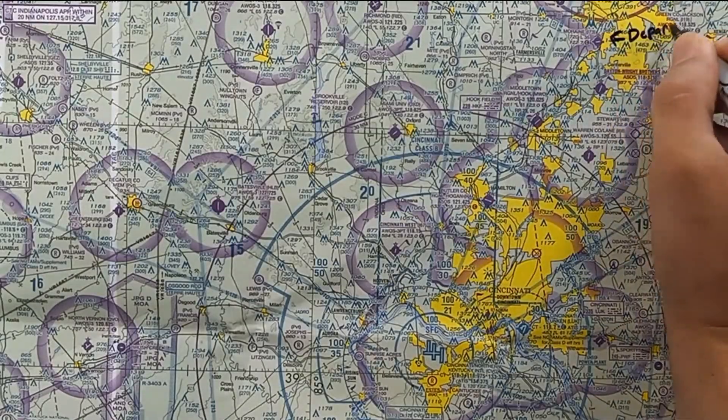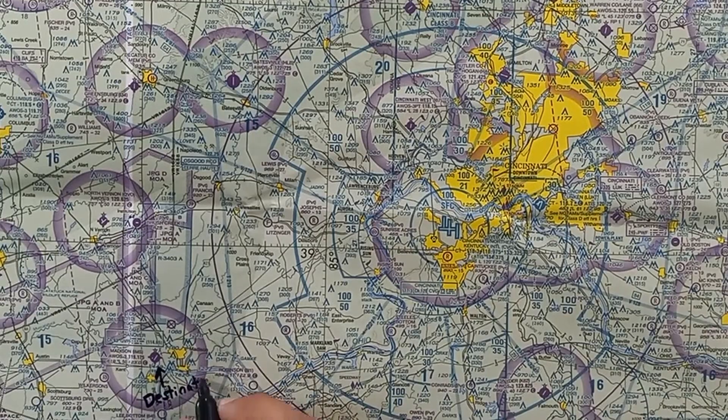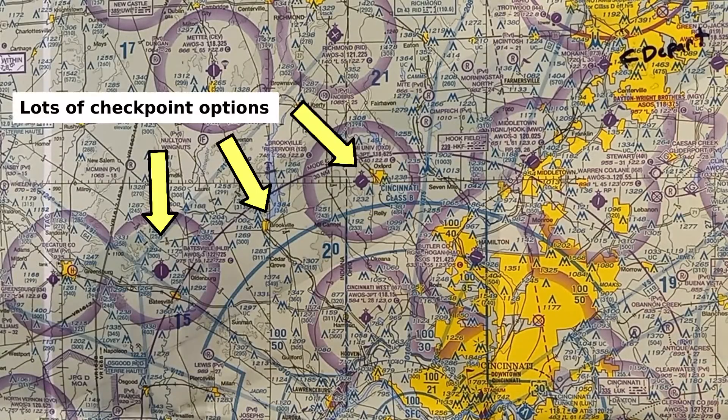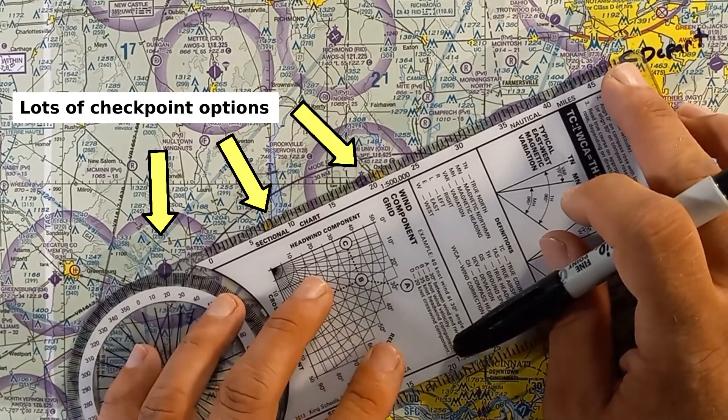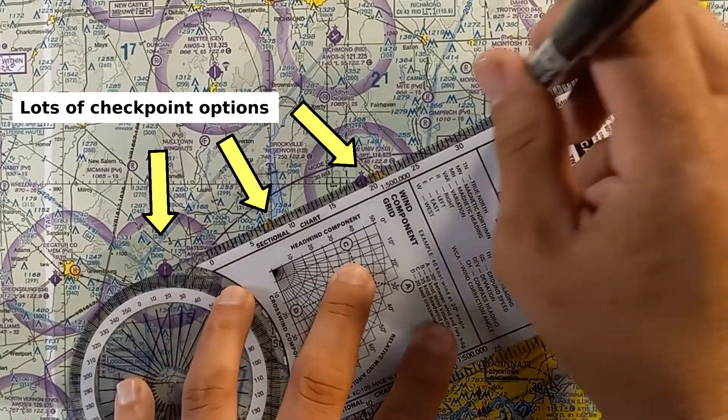Start your flight plan by marking your departure and destination airports on your VFR sectional. Then select a route that includes easy-to-recognize checkpoints that will keep you clear of any airspaces you aren't purposefully trying to enter.